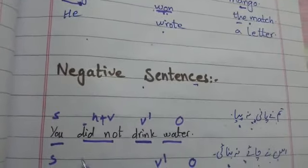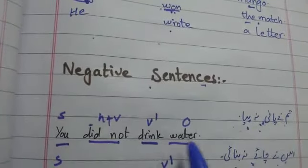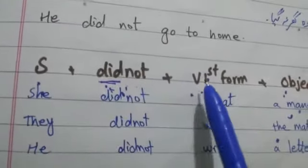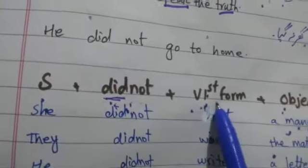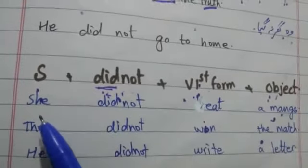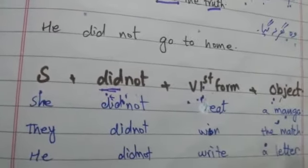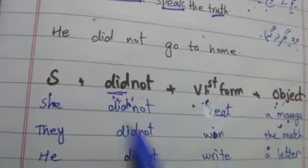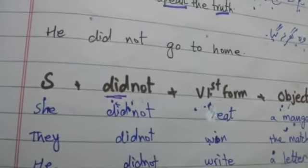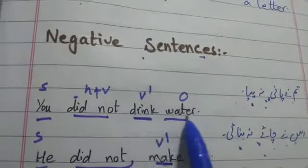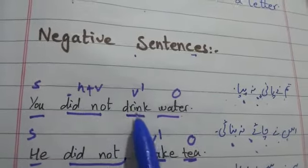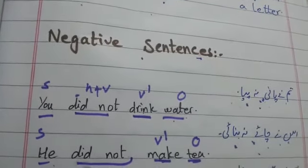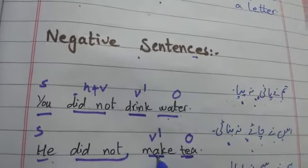جیسے 'تم نے پانی نہ پیا' — 'You did not drink water۔' اس کو بنانے کا طریقہ: subject کے بعد 'did not' use کرنا ہے اور پھر verb کی first form، پھر object۔ Simple past tense میں verb کی second form use ہوتی ہے لیکن 'did not' کے ساتھ verb کی first form use کریں گے۔ جیسے: 'She did not eat the mango,' 'You did not drink milk,' 'He did not make tea۔'